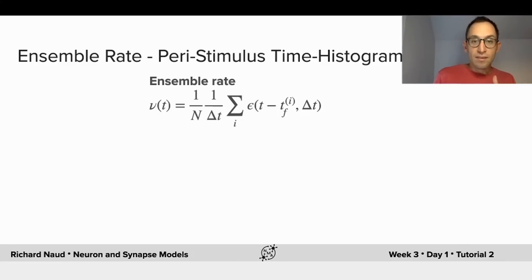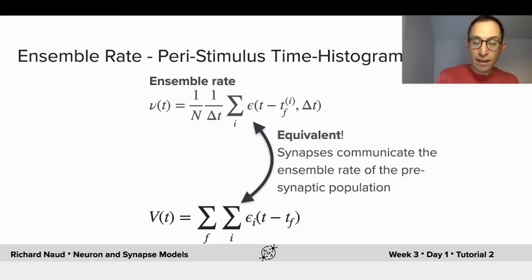The ensemble rate equation is almost exactly the same as the postsynaptic membrane potential that we would get from an ensemble of cells connected to it, meaning that synapses are communicating the ensemble rate of the presynaptic population.